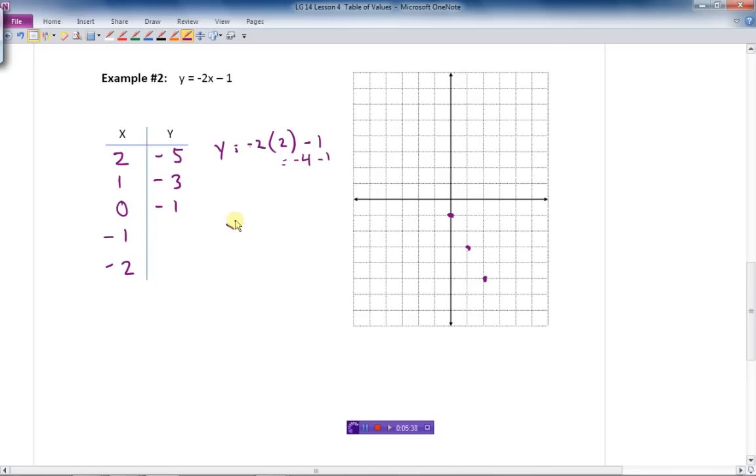In this case, Y equals negative 2 times negative 1 minus 1 more. What's that going to be? Negative times a negative is a positive 2 minus 1, it's going to give me positive 1. 2 minus 1 is 1. And the last one, negative 2. Negative 2 times negative 2 is positive 4 minus 1 is positive 3.